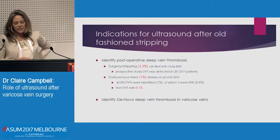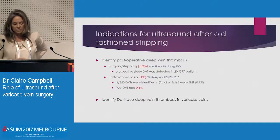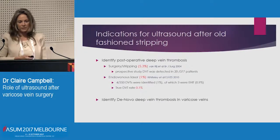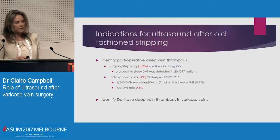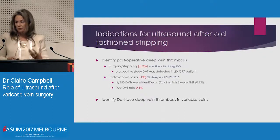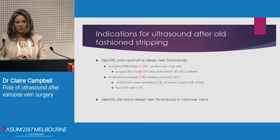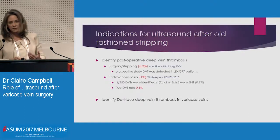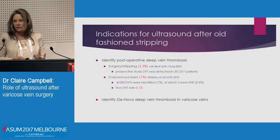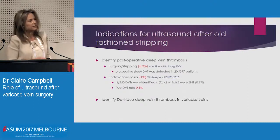So why do we perform ultrasound after the old-fashioned stripping? Well, you're 50 times more likely to get a deep vein thrombosis. So you might be doing a DVT scan. And you might be identifying de novo DVT and people just walking around with varicose veins that are still there after stripping. The chance of getting a DVT is between four and nine times higher than normal if you have varicose veins.